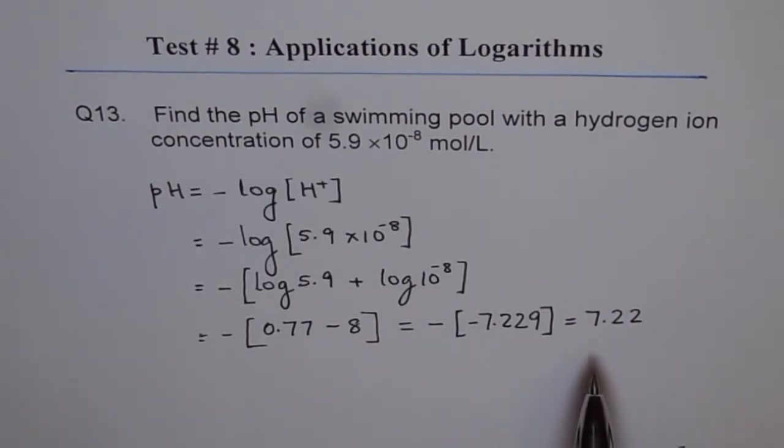So we see that the hydrogen ion concentration in this swimming pool is more than 7, so it is alkaline in nature. Thank you.